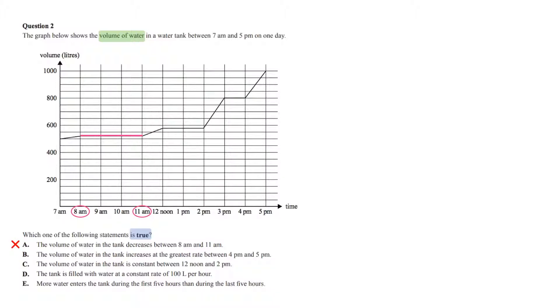Option B. The volume of water in the tank increases at the greatest rate between 4pm and 5pm. There is an increase. The gradient of this line is 4 over 1. Let's check the gradient of this other line that seems to be steeper, so it's 4.5 over 1. So, this option is not true, because this is not the highest gradient.